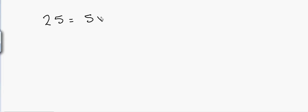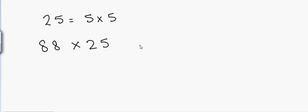We know that 25 equals 5 × 5, so instead of dividing by 2 we will divide by 4. For example, if I have 88 and want to multiply it by 25, I divide 88 by 4, which equals 22, and then put 00 at the end — so the answer is 2200.